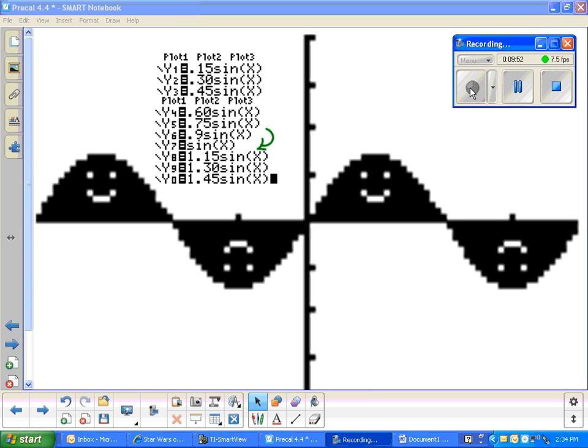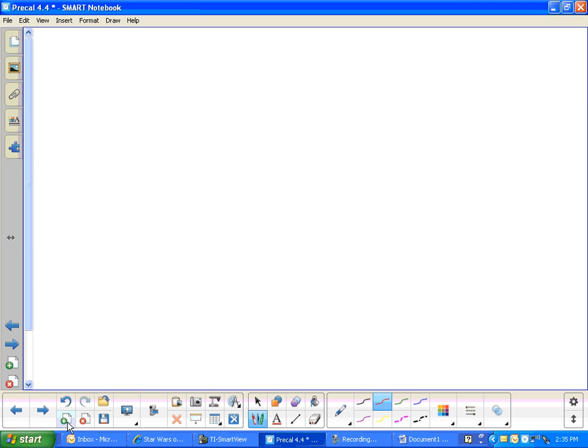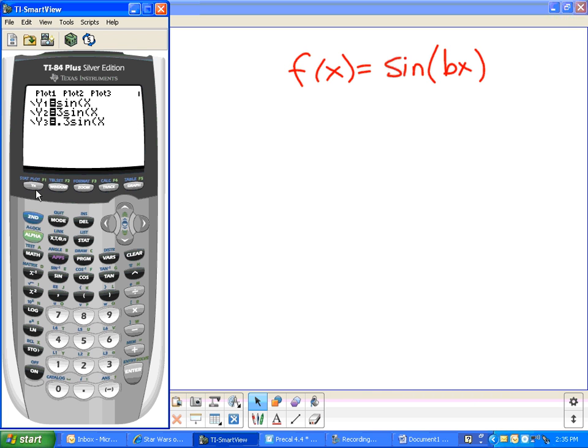All right. So now that we've had a chance to graph it, and I hope you have too, let's go on and modify one of the other parameters, the b parameter. So with b, we're going to say f(x) equals, we'll leave the amplitude 1, but you can change the amplitude too, and that's fine. And we'll just do the sine of bx.